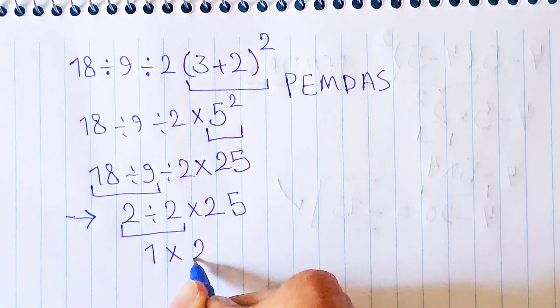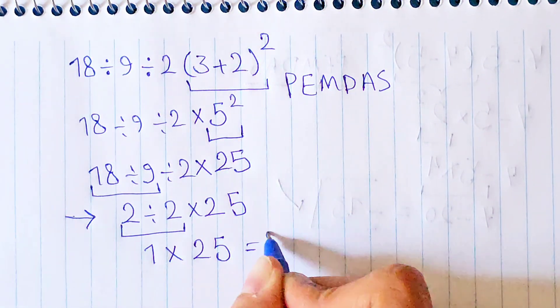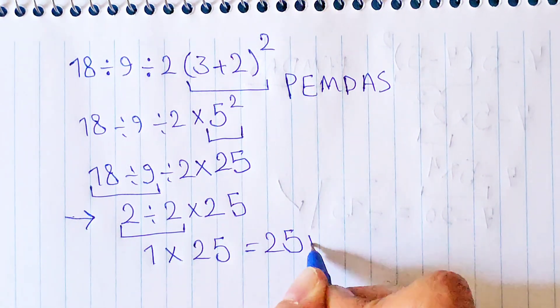1 times 25. 1 times 25 equals 25. Thank you guys for watching, goodbye.